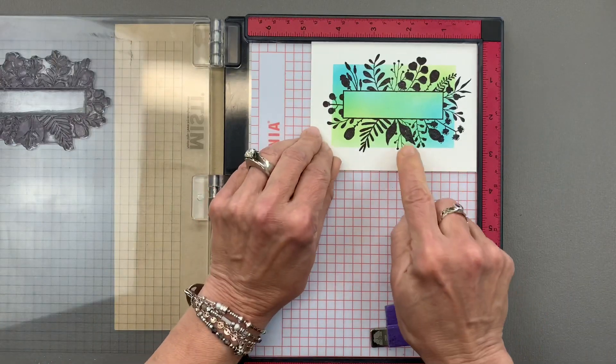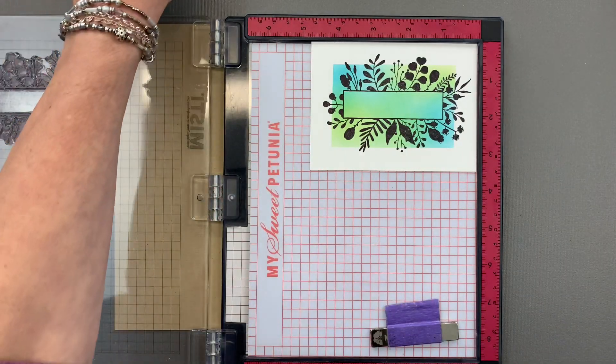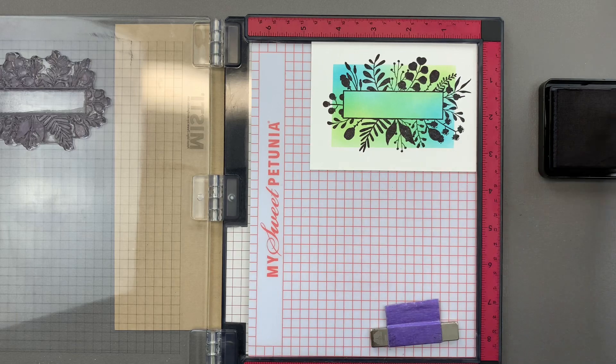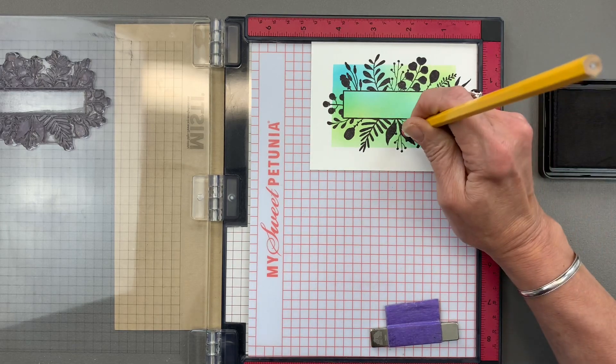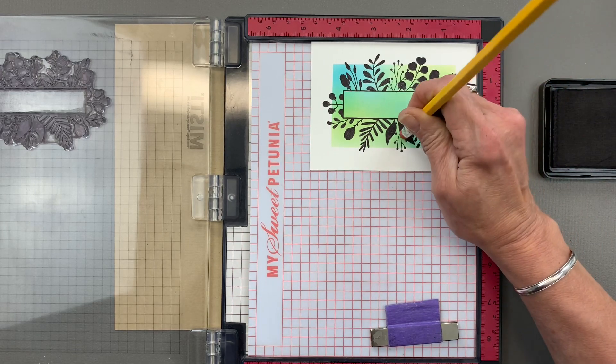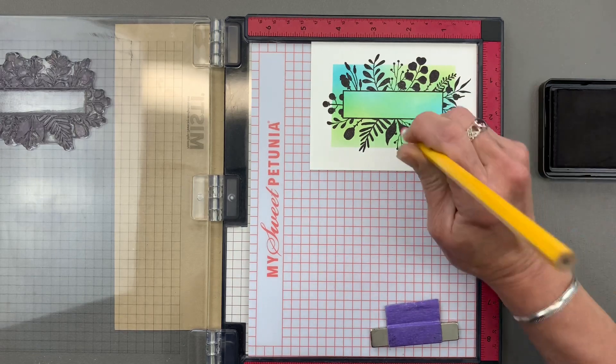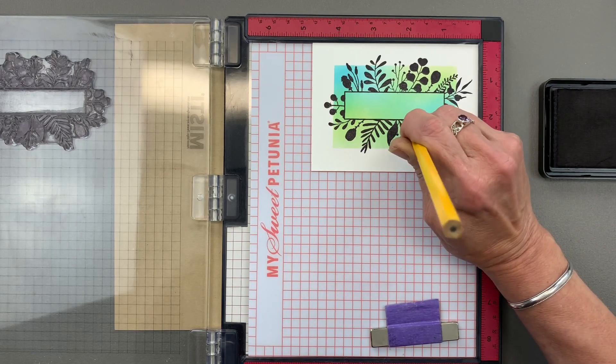Okay, so now I've got that stamped nice and dark. Now if you ever have a little spot missing from your stamped image all you have to do is get a pencil eraser and just tap some ink right into that spot. There we go.